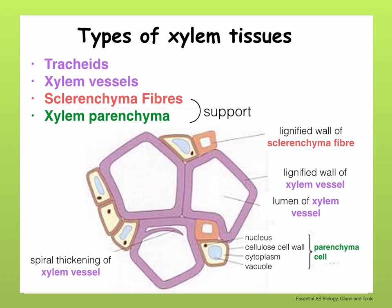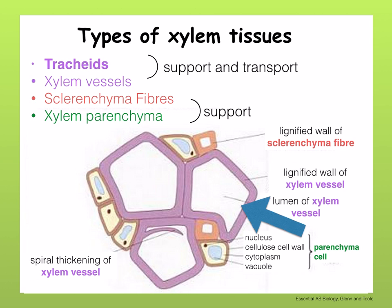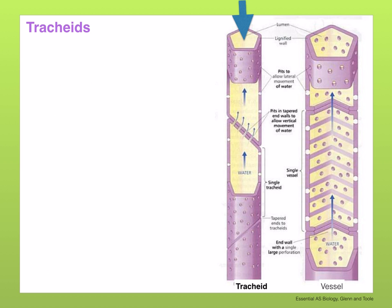Parenchyma and sclerenchyma fibres contribute to the support of the plant, whilst tracheids and xylem vessels help with both support and transport. Let's discuss tracheids first. Here you can see a tracheid and xylem vessels, with the tracheids on the left. They have similar structures to each other, but tracheids are longer and thinner than the vessels.